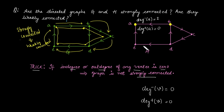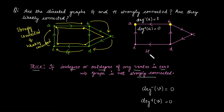Now, is graph H weakly connected? Yes — just remove the direction from the edges and check whether the resulting undirected graph is connected. The undirected version is indeed connected. Therefore, graph H is weakly connected, but not strongly connected.